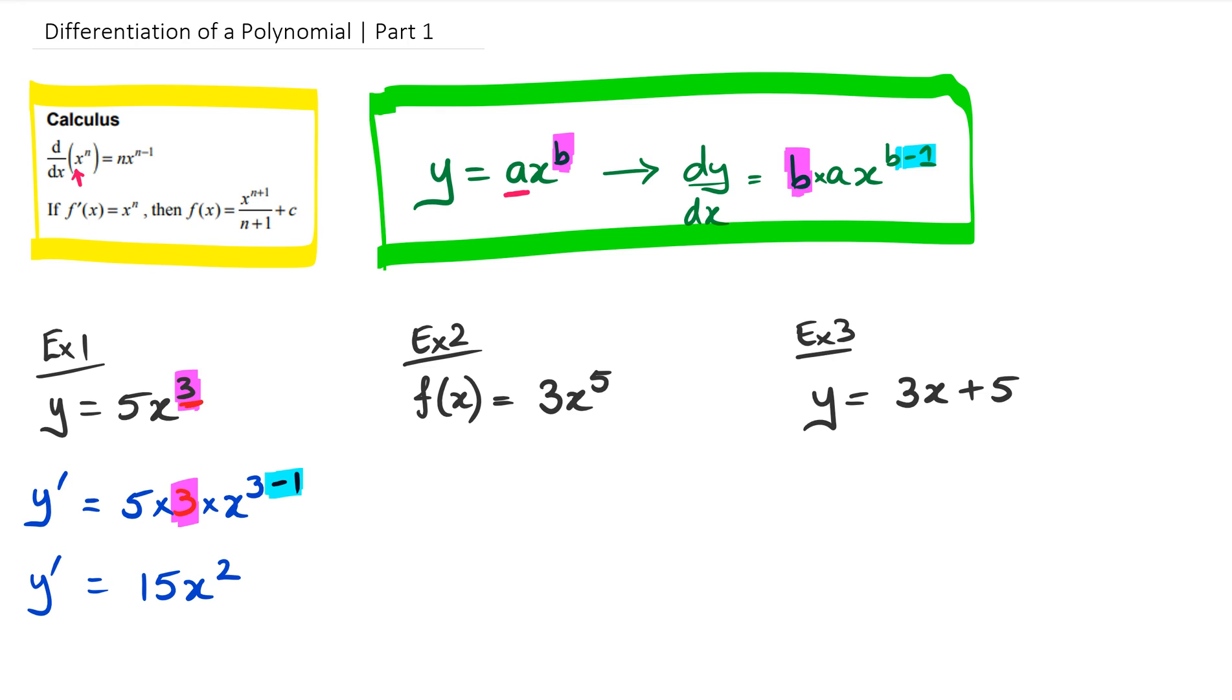Looking at example 2. Now, what you'll notice is with example 2, I've written it in the form of f of x. Now that's basically, it means that it's a function of x. Or in other words, it's just another fancy way of saying y. So when we differentiate f of x, we write this as f dash of x. Notice how these little dashes are popping up with y dash and f dash of x. It's just a function, and then now it's differentiated.